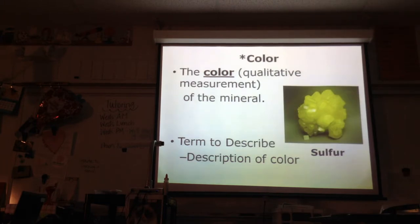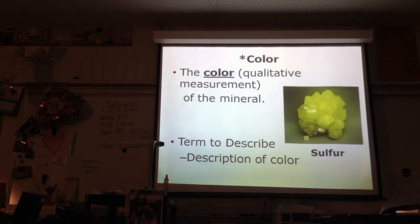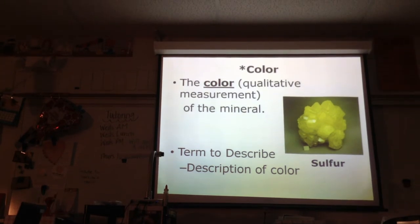Color is a qualitative measurement, so we use letters and words to describe it. Like the sulfur in the picture — what color is it? It's yellow. All sulfur is going to be yellow, so that's one way we use color to identify a mineral. If it's yellow, we can make a pretty good guess that it's sulfur.